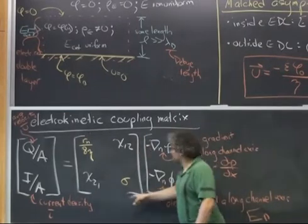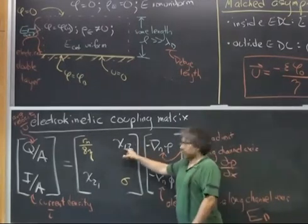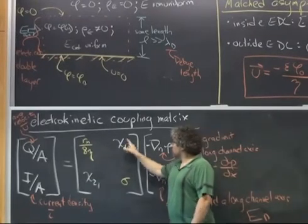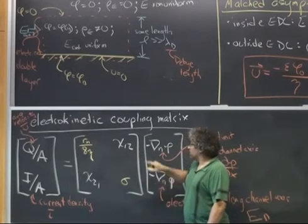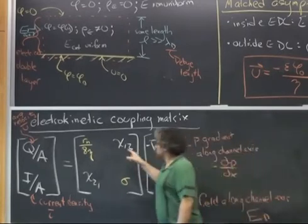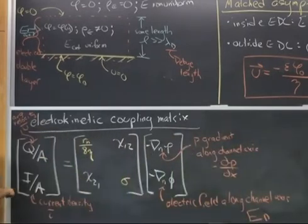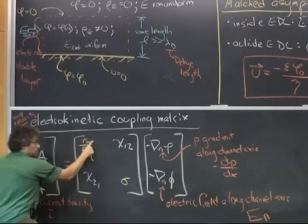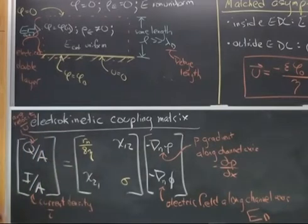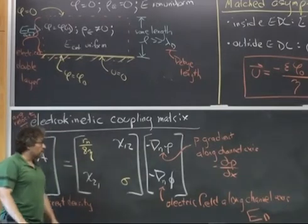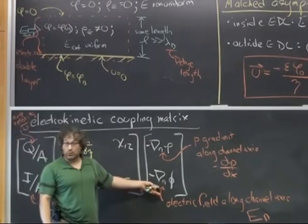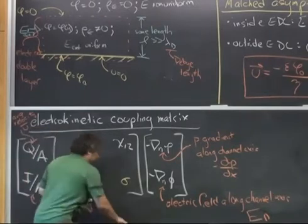This chi-1-2, so I call this electrokinetic coupling matrix chi, but I'm the only person who calls it that. So don't attach any particular importance to that. Chi-1-2 is the contribution to q over a that I get because of the electric field. As written, this electrokinetic coupling matrix says that my mean velocity is given by this magnitude times the pressure gradient plus this times the electric field. So chi-1-2 is going to be the thing that tells me how do I get extra flow from the electric field in addition to what I already know that I get from a pressure gradient.